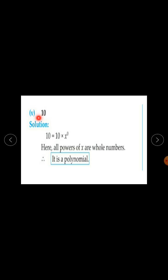Fifth expression: only 10 is given. We can write 10 as 10 into x raised to the power 0, because x raised to the power 0 equals 1, and 10 into 1 is 10. Here the power of x is 0, which is a whole number. Therefore 10 is a polynomial.